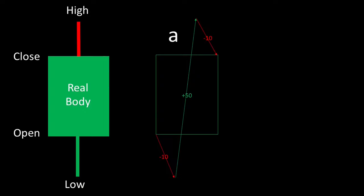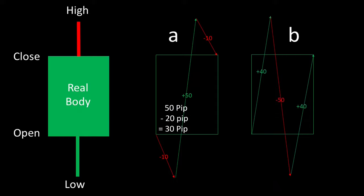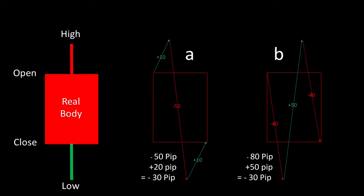Another decisive point for me was the movements within the candle. At point A we see that the price first went from open to low, then to high and finally back to close. So 50 pip bullish movement minus 20 pip bearish movement results in a total bullish movement of 30 pips. In case B, the price runs from open directly to high, then to low and back up to close. The result is again a bullish movement of 30 pips, with a bearish candle it is exactly the opposite.